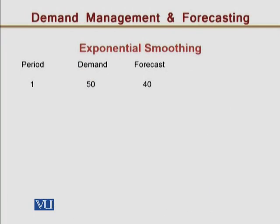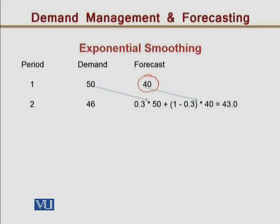Now let's look at an example. One important thing to note is that the initial forecast value is assumed — we don't need to calculate it. For example, in this case the initial figure has been assumed to be 40. You can assume any value, and on that basis the forecast for period 2 will be determined. We have assumed 40 as the initial forecast for period 1, and the actual demand for period 1 is 50. Using this, we calculate the forecast for period 2, which comes out to 43.